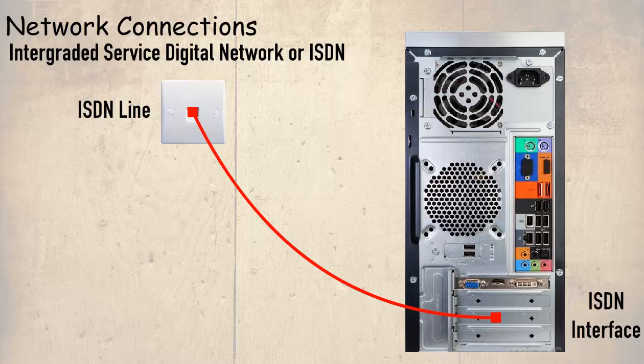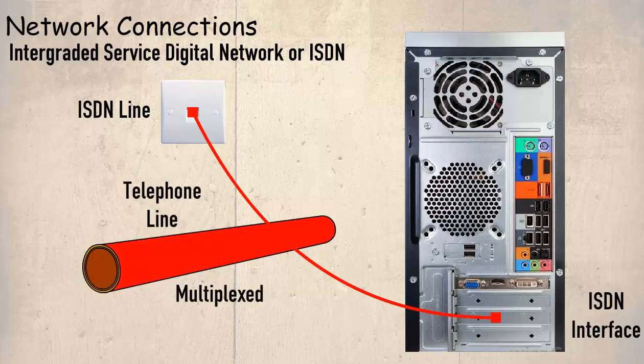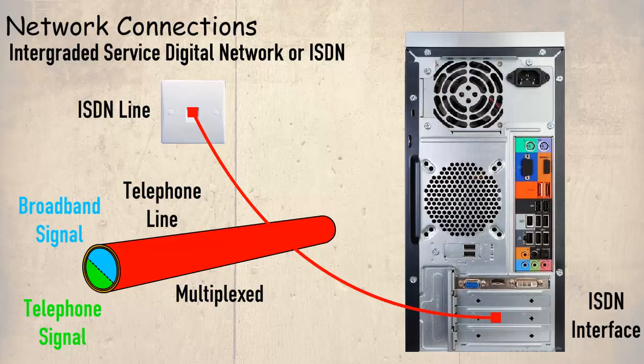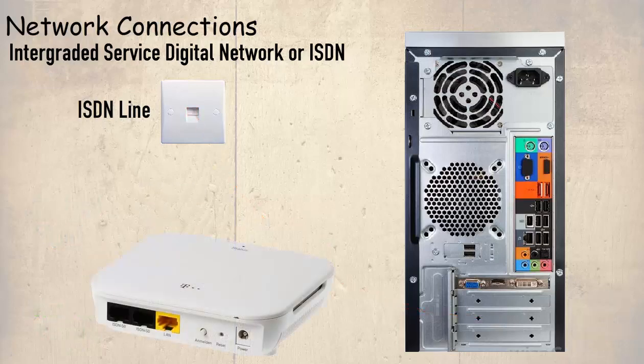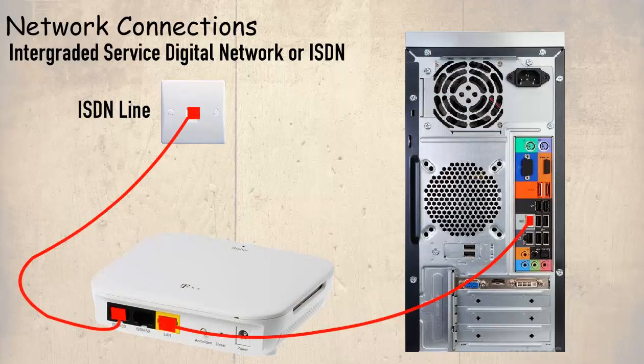An alternative to this is the existing telephone line is multiplexed, or the signal is split up into two channels. One would be dedicated to telephone conversation, and the other to a broadband signal, and both could be used at the same time. It is also possible that some of these connection technologies are combined. For example, it is possible to have an Ethernet interface connected to an external ISDN interface, which in turn is connected to the ISDN line.